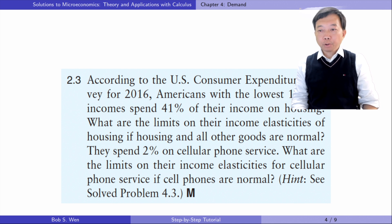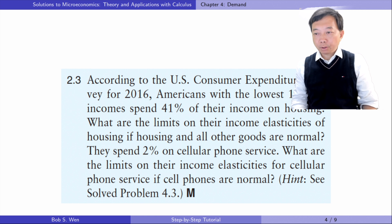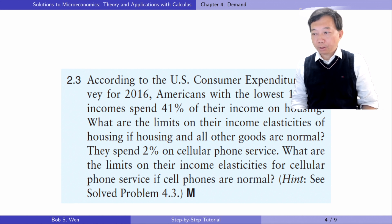Let's solve exercise 2.3. According to the US Consumer Expenditure Survey for 2016, Americans with the lowest 10% of incomes spend 41% of their income on housing. What are the limits on their income elasticity of housing if housing and all other goods are normal? They spend 2% on cell phone service. What are the limits on their income elasticity for cell phone service if cell phones are normal?